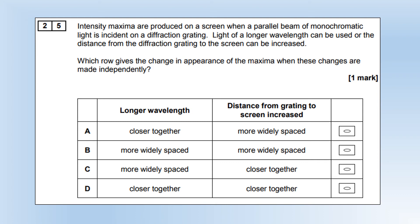Intensity maxima are produced on a screen when a parallel beam of monochromatic light is incident on a diffraction grating. Light of longer wavelengths can be used or the distance from the diffraction grating to the screen can be increased. Which row gives the change in appearance of the maxima when these changes are made independently? A longer wavelength gives you a bigger angle of diffraction for each of the orders. So longer wavelengths spaces them out. So it's going to be B or C. And increasing the distance doesn't change the angle. But with the same angle, if you move further away, that's going to space them more as well, giving us option B.